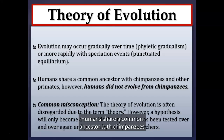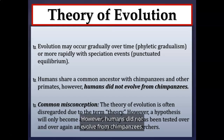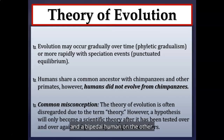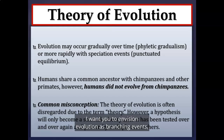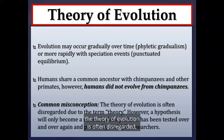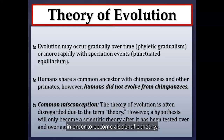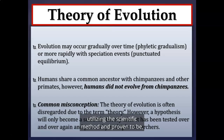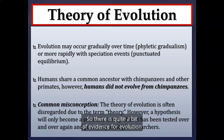Some common misconceptions: humans share a common ancestor with chimpanzees and other primates, but humans did not evolve from chimpanzees. Evolution should be envisioned as branching events — a bushy, complicated tree or braided delta — not a linear progression. Also, the theory of evolution is often disregarded simply due to the term 'theory,' but in science, a theory started as a hypothesis and was repeatedly tested using the scientific method and supported by evidence.